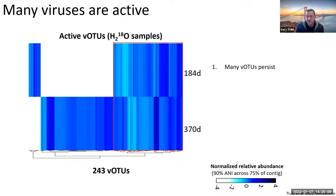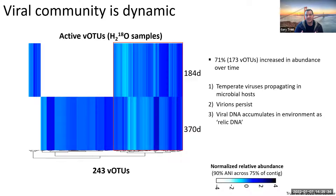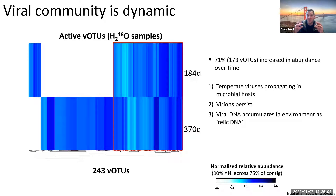Looking at just the active ones, comparing half year to full year, many viral populations persisted - they're still there from half year to full year. A large portion of them actually increased their abundance over time, so they continued to infect or multiply in the host over the rest of the year. Some theories: these could be temperate viruses integrated in the host that doubled as the host doubled; they could have burst out and made virions that persisted in the environment; or the host died and because these are peatland soils, the DNA is protected, so they may have remained as relic DNA.